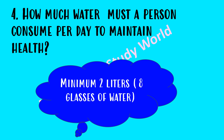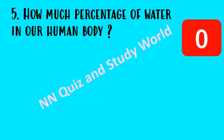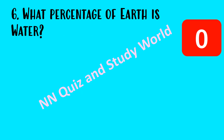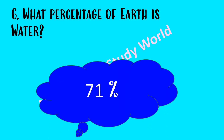The answer is a minimum of two liters, that is eight glasses of water. How much percentage of water is present in the human body? The answer is around 60 percentage of water.